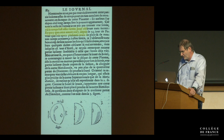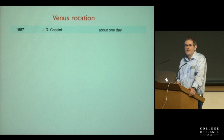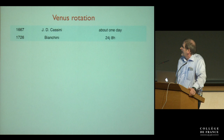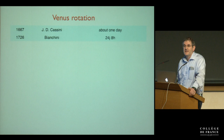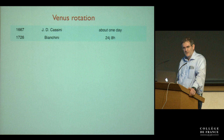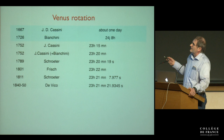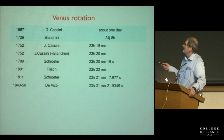Cassini found some spot on the surface of Venus — or what he thought could be a spot. He was not very conclusive in his paper, but basically said it seemed to be about a one-day period. Then there were other observations, and it was Bianchini — another Italian, since at the time the Italians had the best telescopes — who found 24 days. That was quite a puzzle and there was a big controversy.